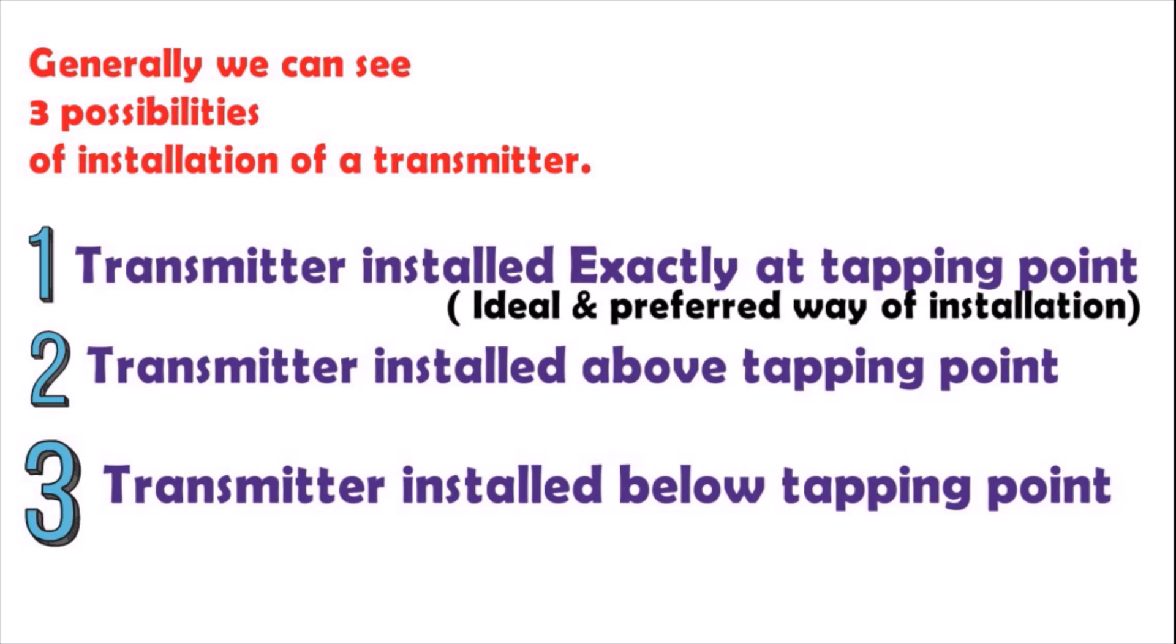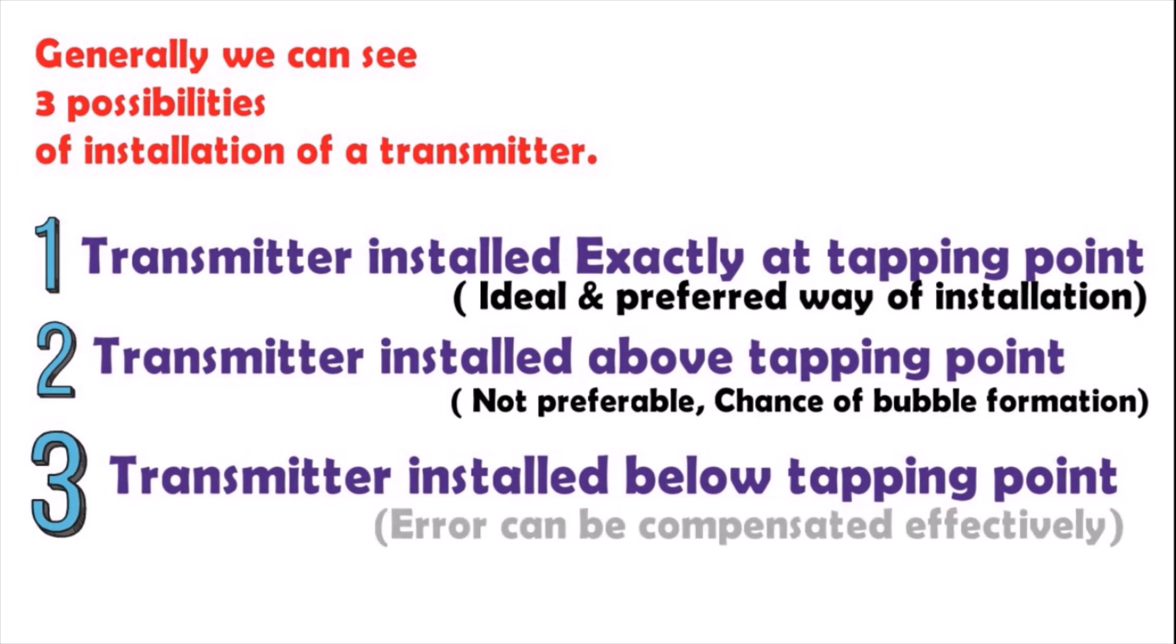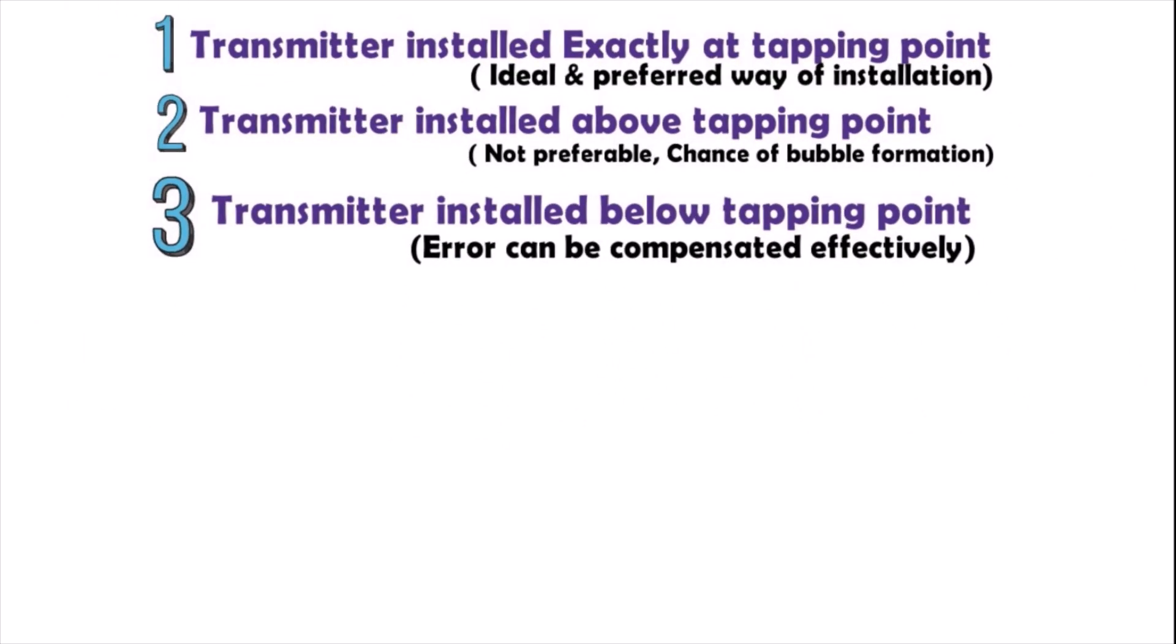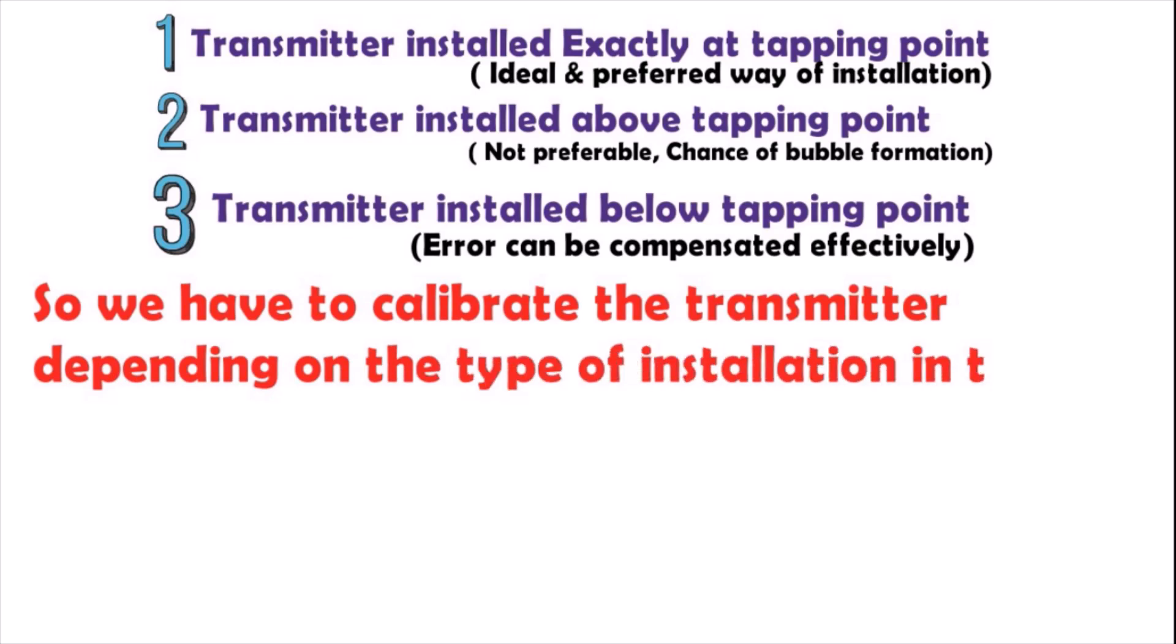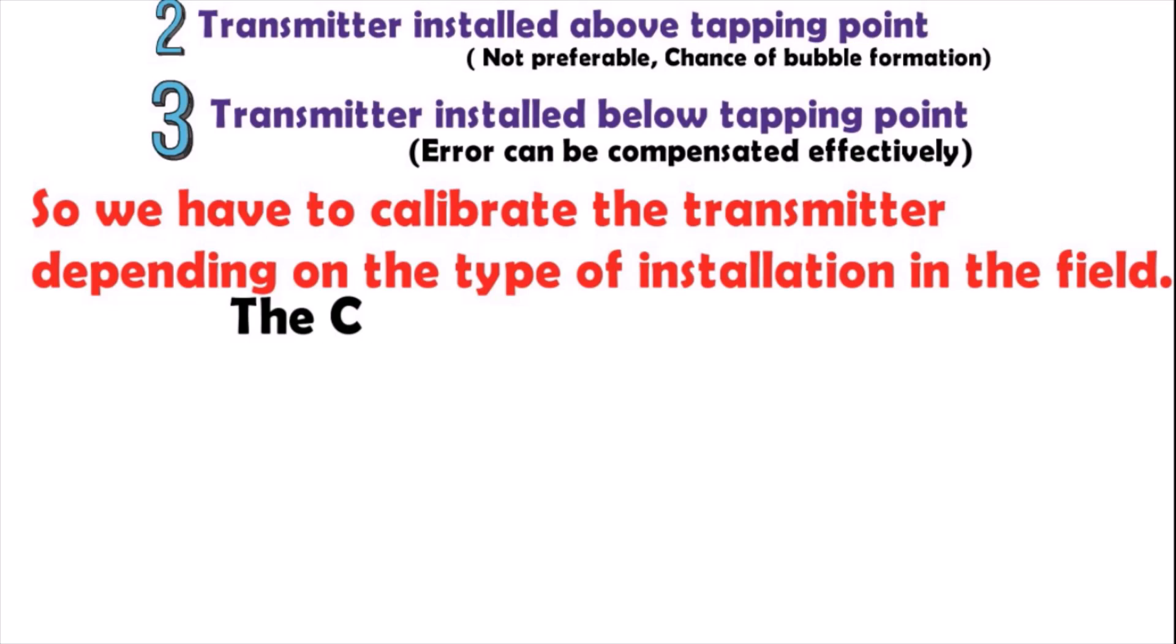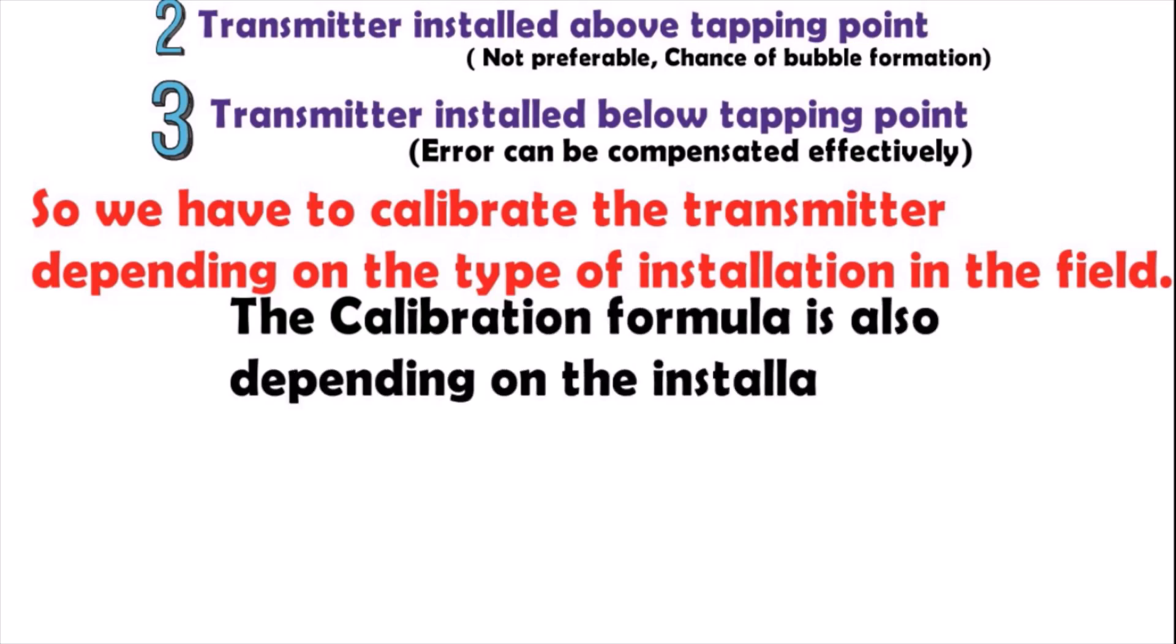The first case is the ideal and preferred way of installation. The second is not preferable due to chance of bubble formation. And the third one, error can be compensated effectively. So we have to calibrate the transmitter depending on the type of installation in the field. The calibration formula also depends on the installation.